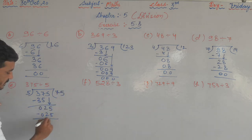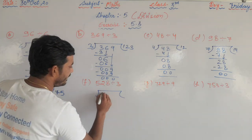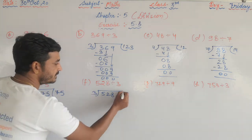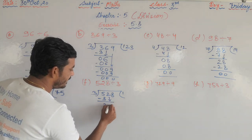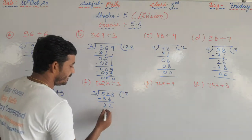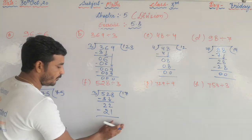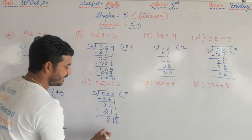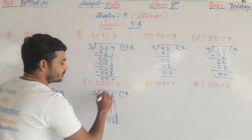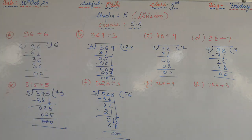Now 528 divided by 3. Take first digit 5: three ones are 3, subtract 5 minus 3 equals 2. Bring down 2 to get 22. Three sevens are 21, subtract: remainder 1. Bring down 8 to get 18. Three sixes are 18, remainder 0. The quotient is 176.